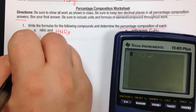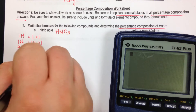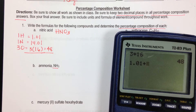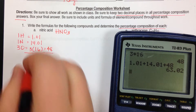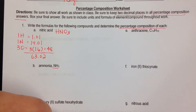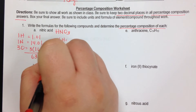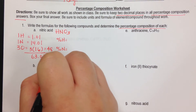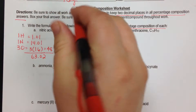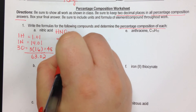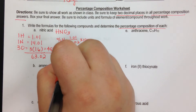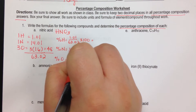Hydrogen is 1.01, nitrogen is 14.01 — we get these masses from the periodic table. Then 3 times 16 for oxygen, just double check, that's 48. When I add all of these up, I get a total molecular mass of 63.02. When we find the percent composition, we find the percent of hydrogen, percent of nitrogen, then percent of oxygen. For hydrogen, we take 1.01 divided by 63.02, multiplied by 100. Same thing for nitrogen: 14.01 divided by 63.02 times 100.